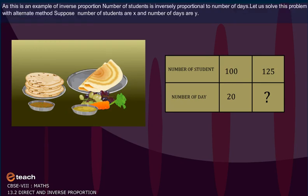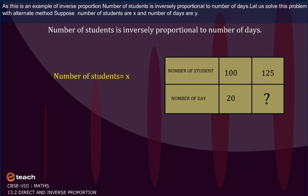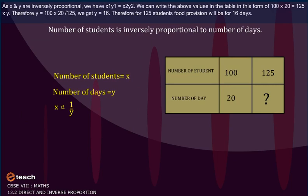As this is an example of inverse proportion, number of students is inversely proportional to number of days. Let us solve this problem with alternate method. Suppose, number of students are x and number of days are y. As x and y are inversely proportional, we have x1 y1 is equal to x2 y2.